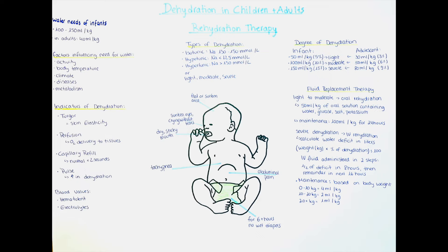Lastly, we will talk about treatment with fluid replacement therapy. First, we want to determine the degree of water loss. If we know the prior weight before dehydration, we can easily calculate the water loss percentage. Let's say an adult man weighs 75 kg and loses 4.5 kg of fluids — what percentage is 4.5 out of 75? We do 4.5 divided by 75, which gives us 0.06, then multiply by 100 to get 6%. We remember that 6% in an adolescent is moderate dehydration.